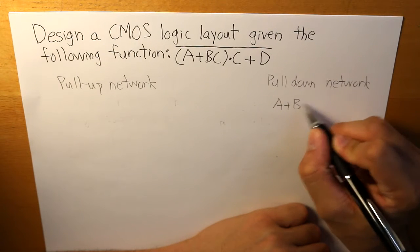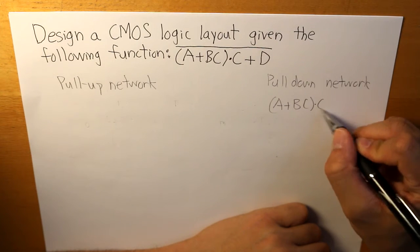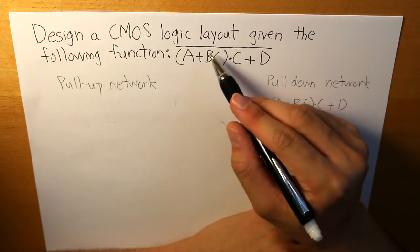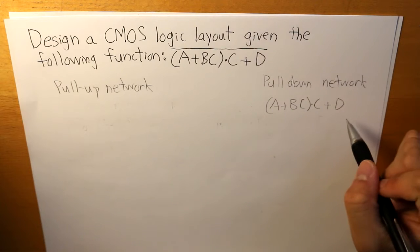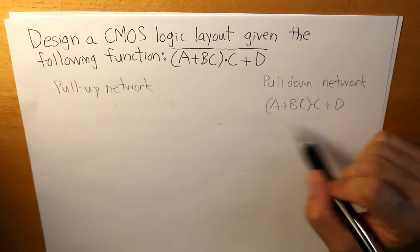So basically what we do is we just write the NMOS equivalent of all these inputs together, which is A plus BC, and then that, basically the same thing without this inverter right here. So we're going to have to draw the NMOS equivalents of these inputs.